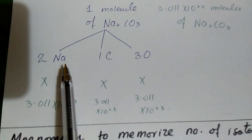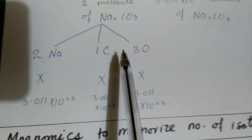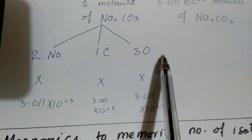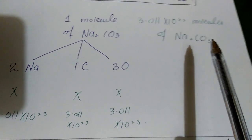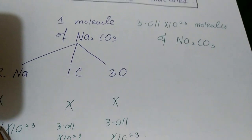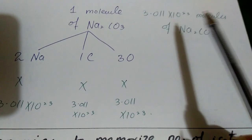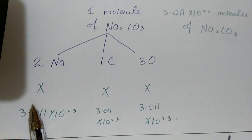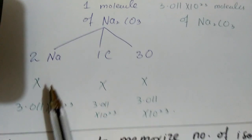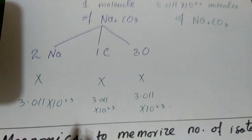So in one molecule there are 2 sodium atoms, 1 carbon and 3 oxygen. So 3.011 into 10 to power 23 molecules. How many atoms will there be? We will multiply these number of atoms, and the total number of atoms will be found in the respective elements.